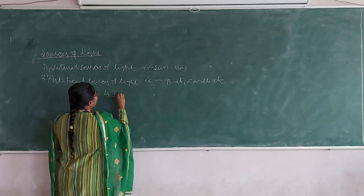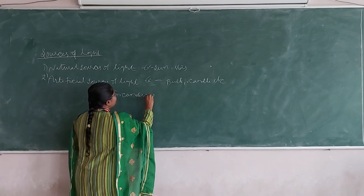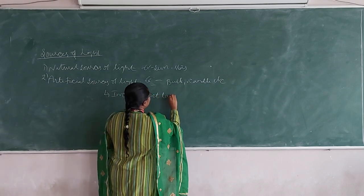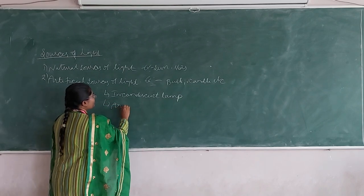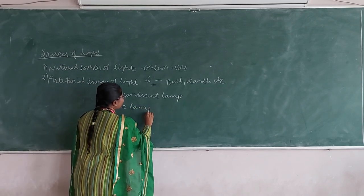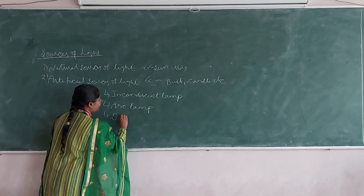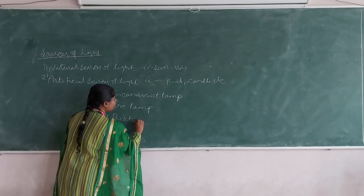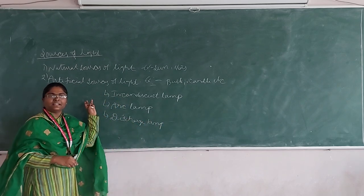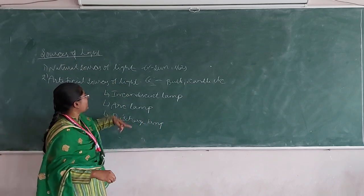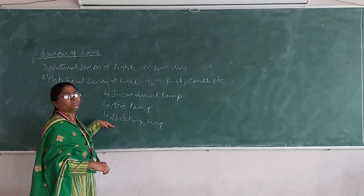The first one is incandescent lamp, second one is arc lamp, and third one is discharge lamp. So artificial sources of light are three types: incandescent lamp, arc lamp, and discharge lamp.